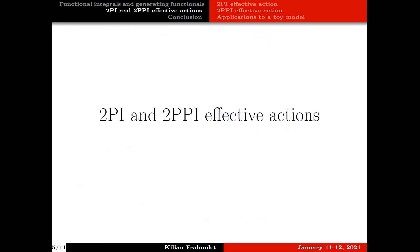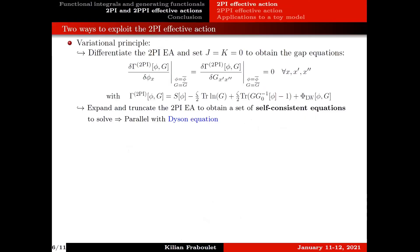In the next section I will focus on these two functionals to discuss their properties in a deeper way. For the 2PI effective action, all physical quantities are obtained in the configuration where all sources vanish, and we can deduce that any observables can be calculated by extremizing this 2PI effective action. This gives the so-called gap equations. If we expand and truncate the 2PI effective action in these equations we get a set of self-consistent equations to solve. Inserting the expression involving the Luttinger functional, the rightmost equation actually reduces to Dyson's equation.